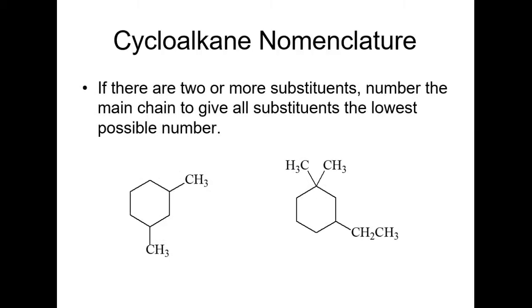If there are two or more substituents, number the main chain to give all substituents the lowest possible numbers. So what does that mean? Let's look at this one. We have two groups. There's lots of ways of counting this. I can count it one, two, three, or one, two, three, four, five. If I count this way, my substituents are at the one carbon and the three carbon. If I count the other way, it's at the one carbon and the five carbon. I want my numbers to be the lowest. So that's why I'm going to do one, three. So this is called one, three-dimethylcyclohexane.